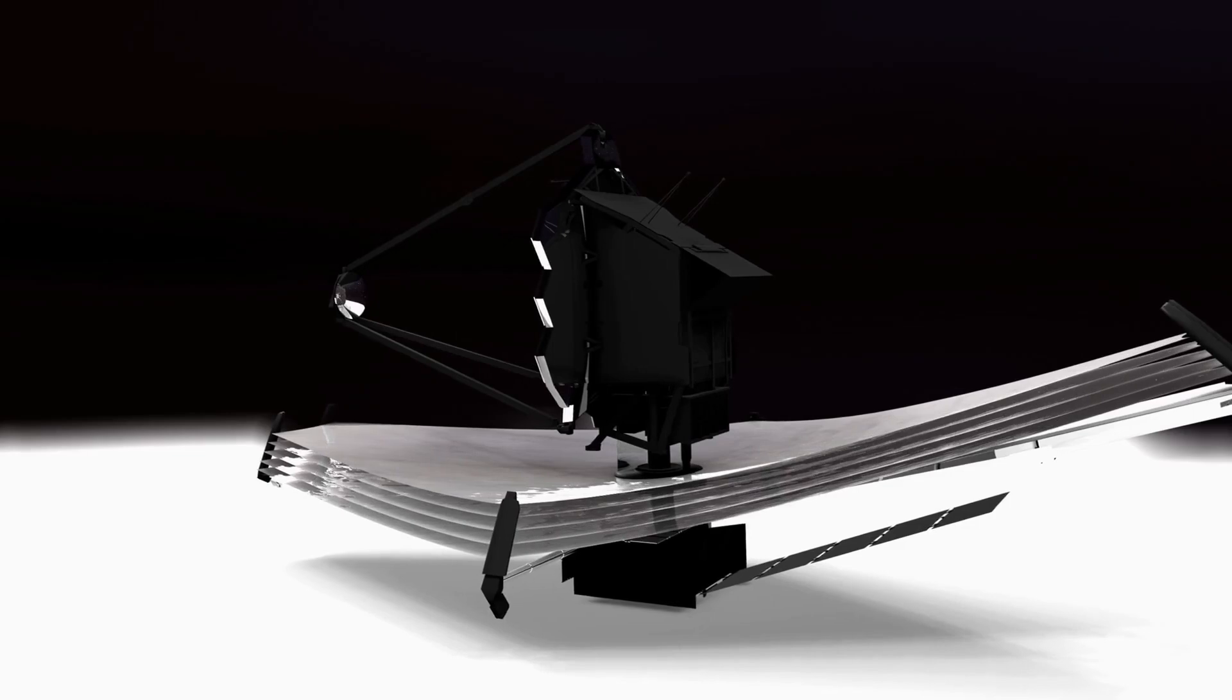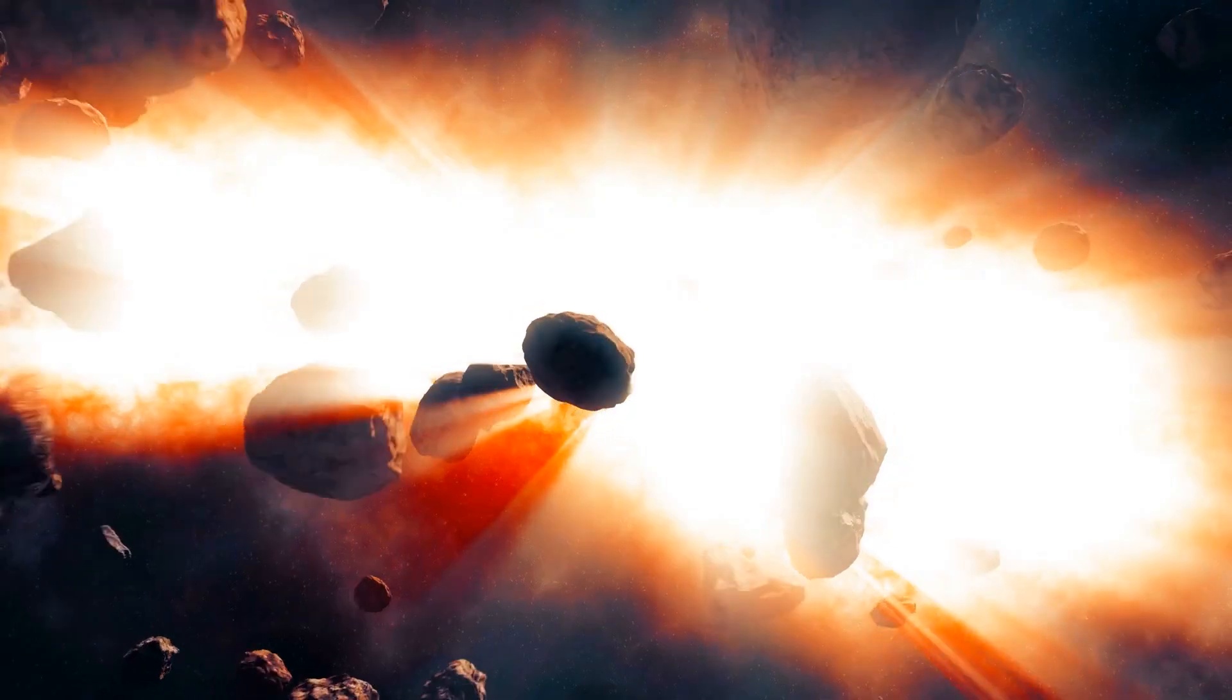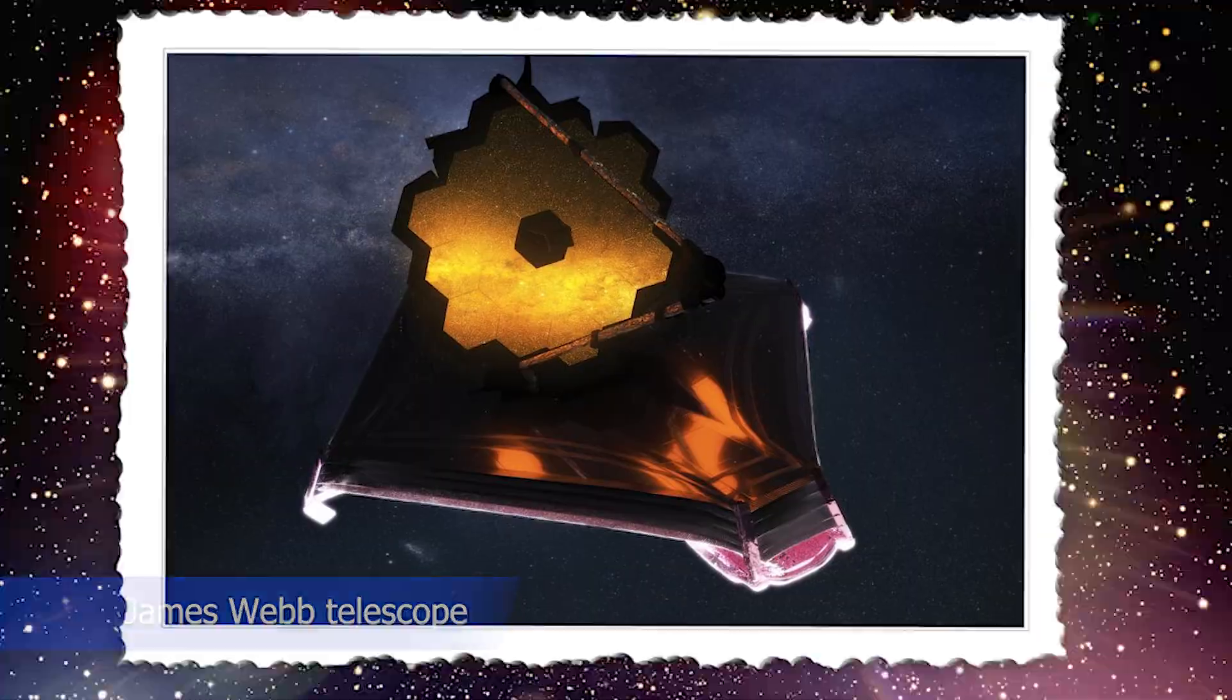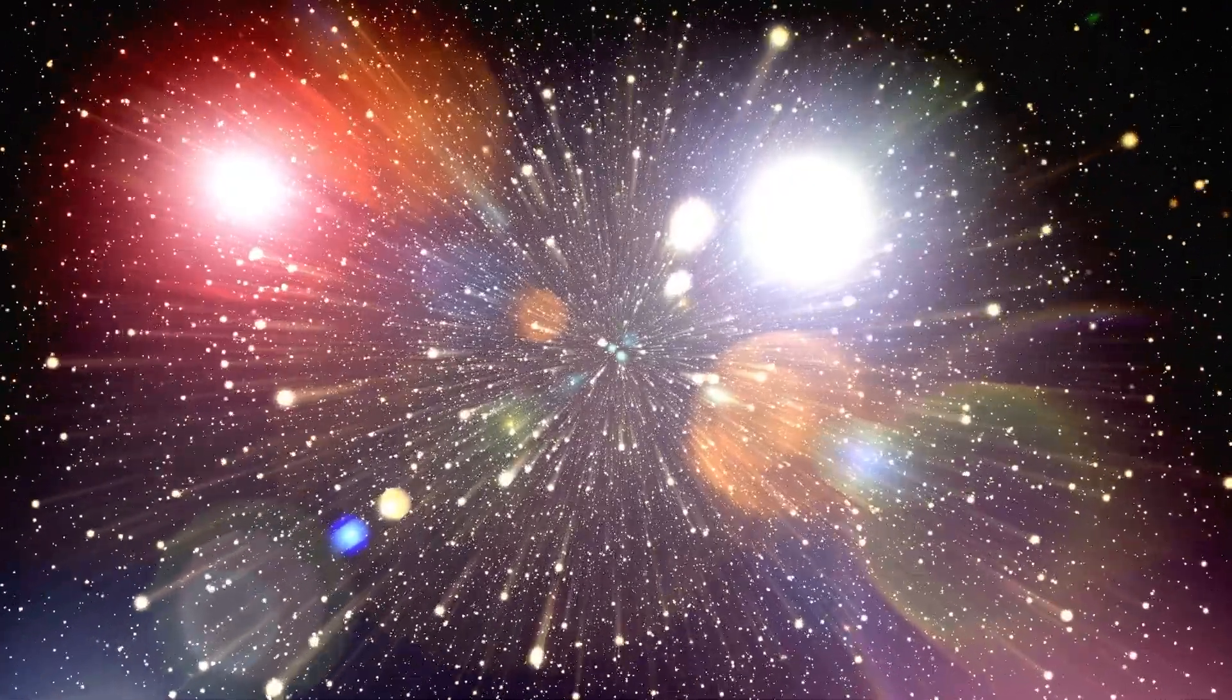James Webb's heightened sensitivity is essential for seeing items that were present not long after the Big Bang. The capacity of Hubble and JWST to observe distinct light wavelength ranges accounts for the majority of their disparity in light sensitivity.